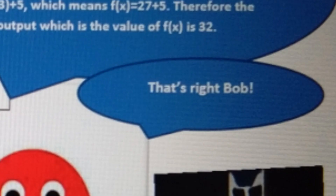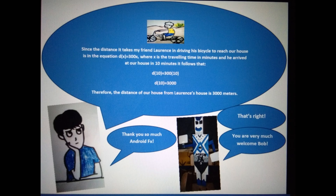That's right, Bob. Since the distance it takes my friend Lorenz in driving his bicycle to reach our house is in the equation d of x equals 300x, where x is the traveling time in minutes, and he arrived at our house in 10 minutes, it follows that d of 10 is equal to 300 times 10. D of 10 is equal to 3,000. Therefore, the distance of our house from Lorenz's house is 3,000 meters.